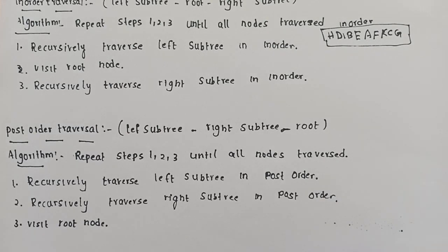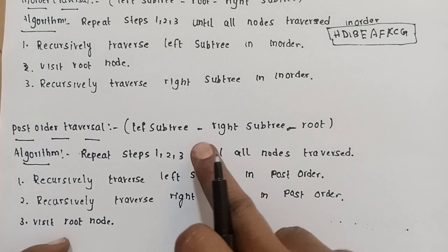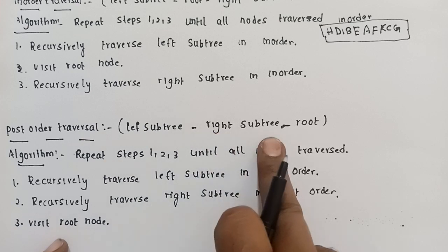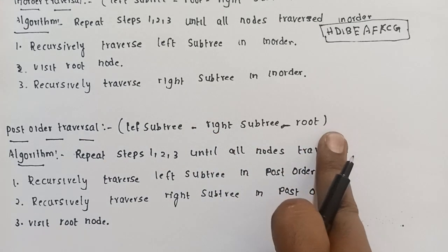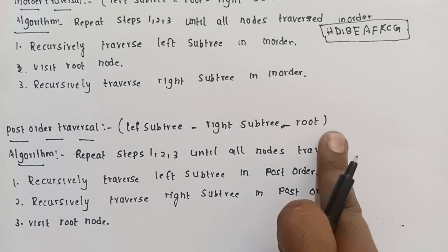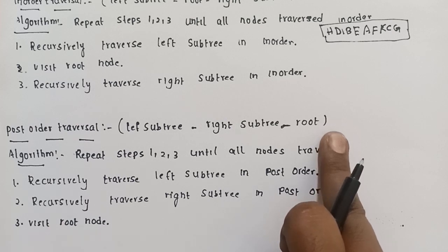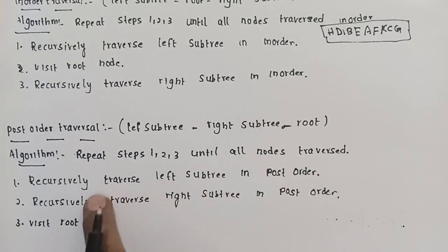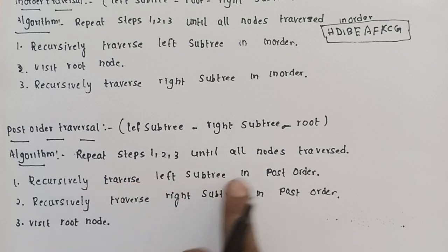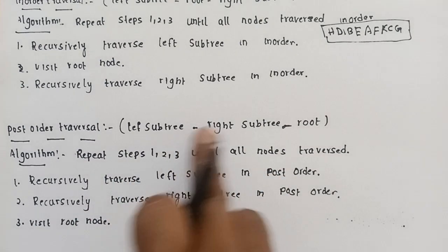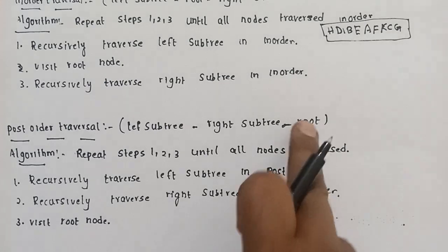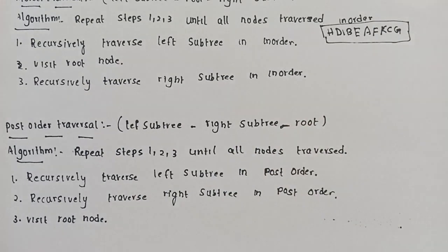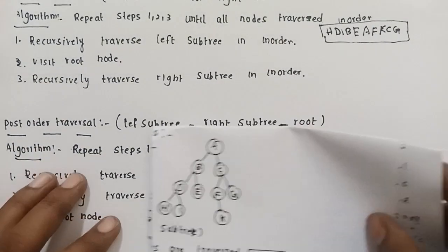The last technique is post-order traversal. In post-order, the left subtree is traversed first, then the right subtree, and finally the root node is visited last. This is the key difference: in pre-order the root is first, in in-order the root is in the middle, and in post-order the root is last.